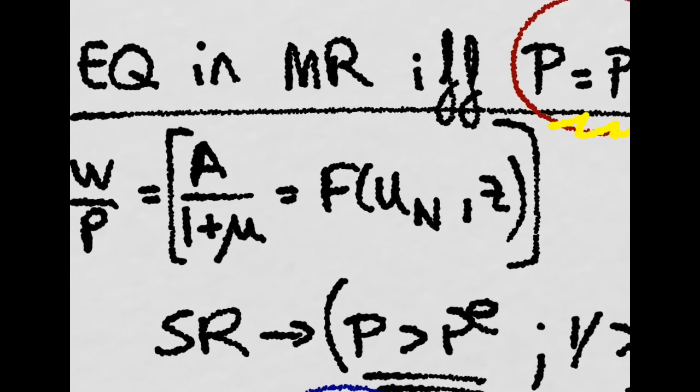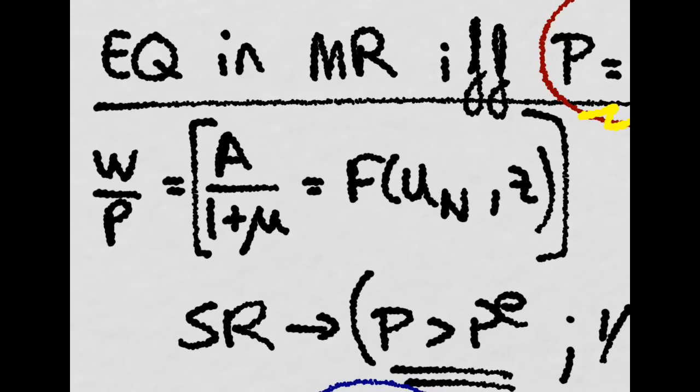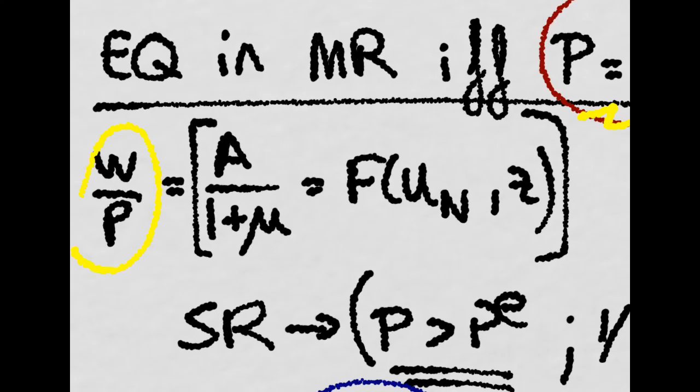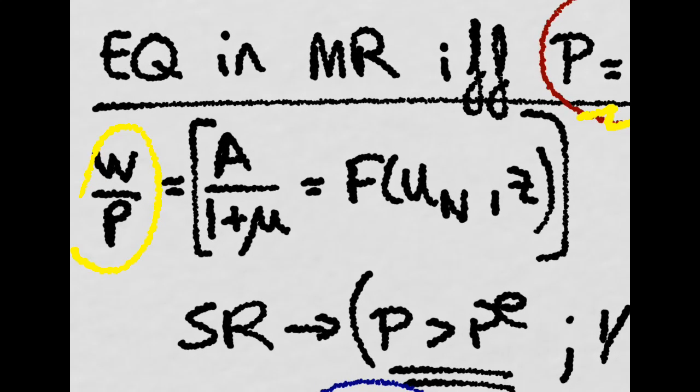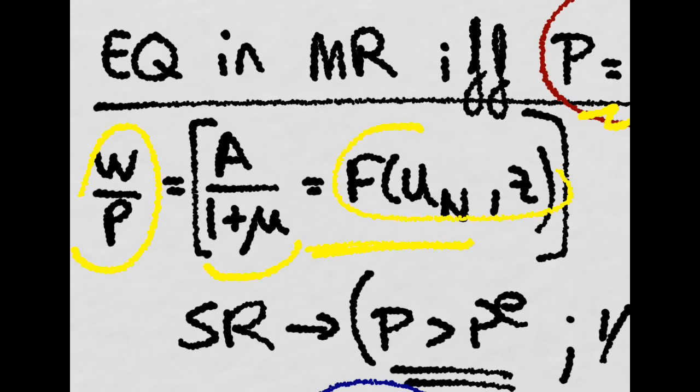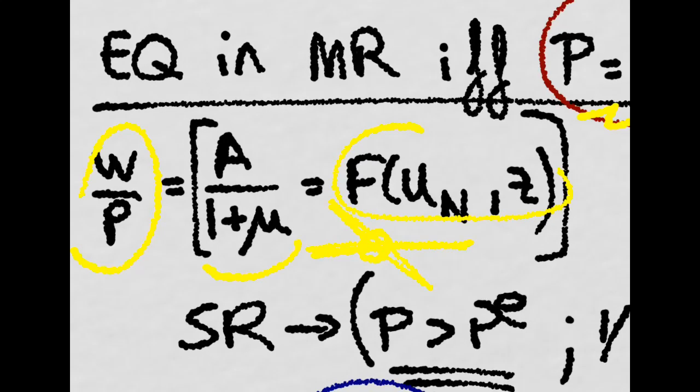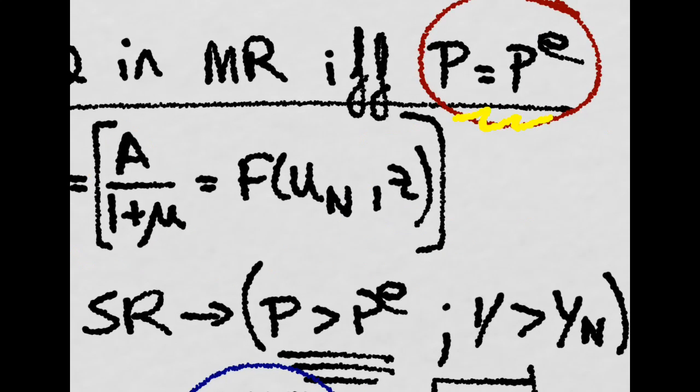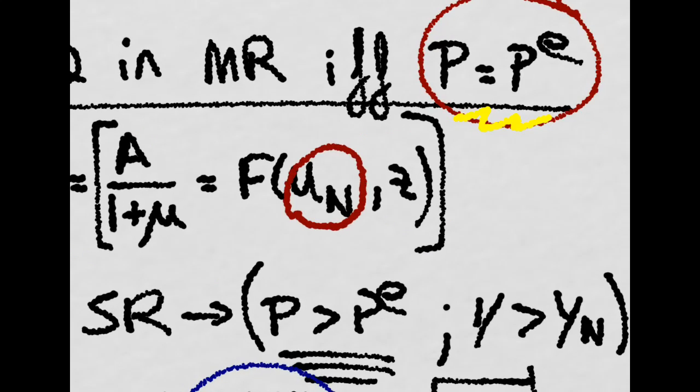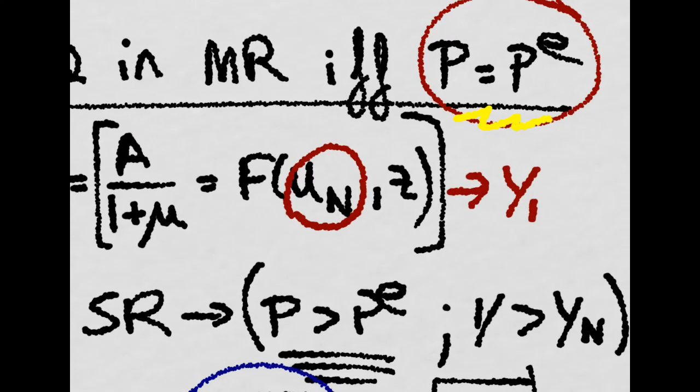So remember the expression for the equilibrium in the labor market, that was that real wages were equal to this, which was the price setting, equal to this, that was this point right here, and that at that equilibrium point we would have the natural unemployment level, and that will give us the natural output level.